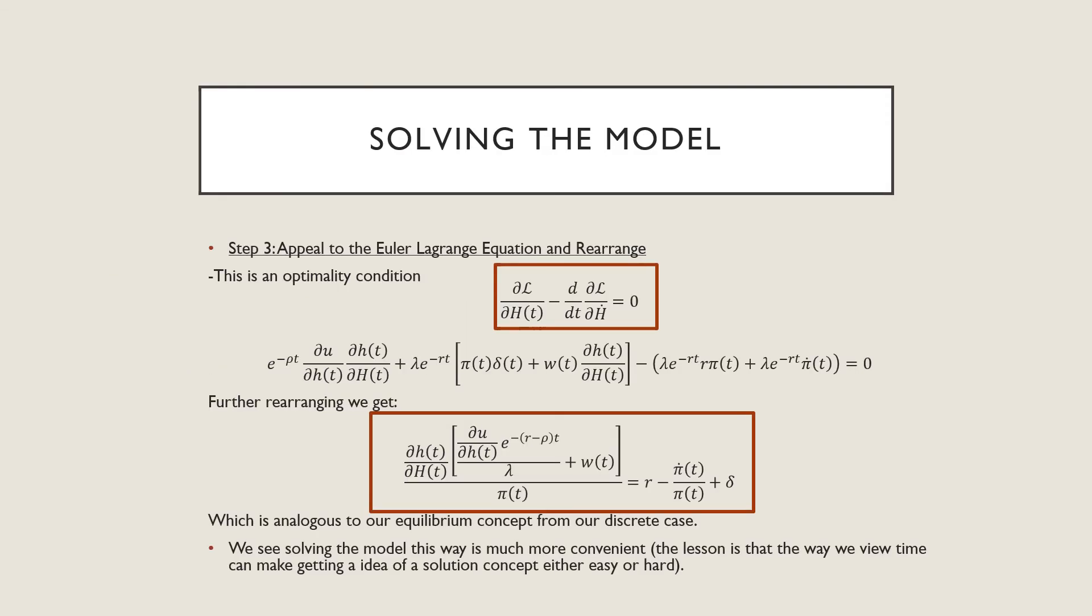The Euler-Lagrange equation basically just says that once we're at an optimum, we are unable to deviate from that. If we were to deviate from that optimum in the next instant, any possible gains that would be made would be completely eliminated.